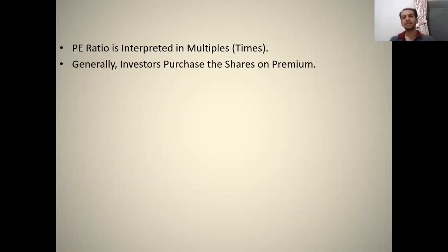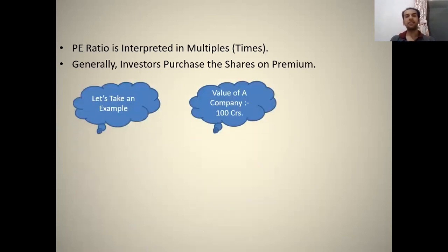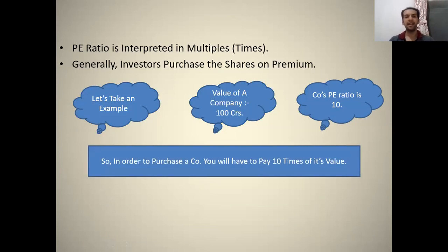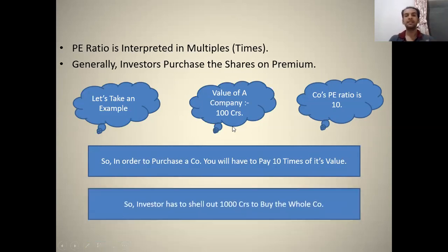Suppose an investor is purchasing a share — remember that an investor purchases a share always at a premium. For example, if the value of company A is 100 crores and the price-to-earnings ratio of that company is 10, then the investor will pay 10 times its current value. Since the current value is 100 crores, the investor will invest 1,000 crores in total.